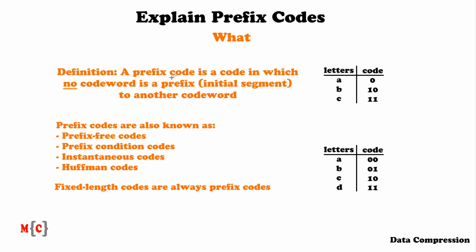Now that we have answers to where prefix codes are applied and why they are so important, let's look at a definition. A prefix code is a code in which no codeword is a prefix — or in other words, an initial segment — to another codeword. I've underlined the word 'no' here, so no codeword should be a prefix to another codeword.